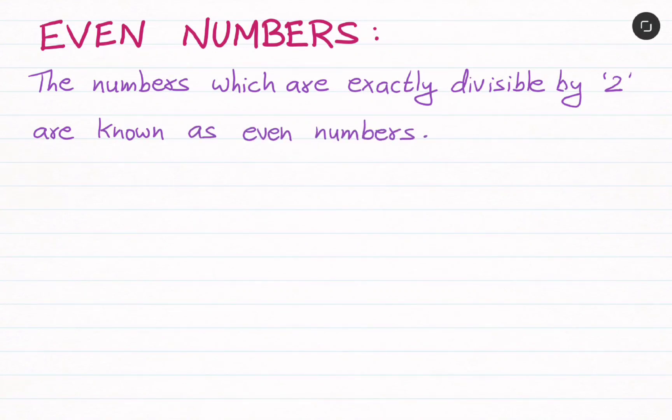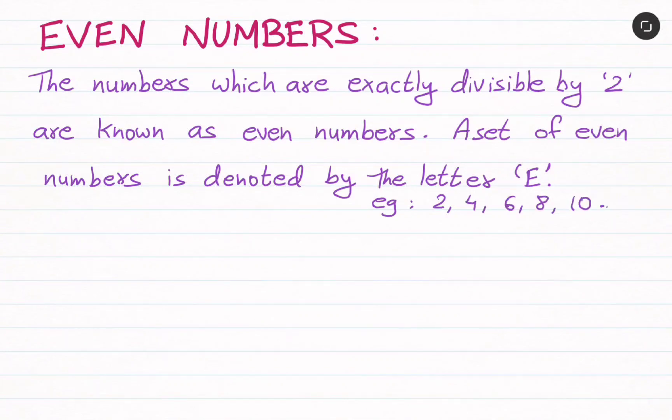The numbers which are exactly divisible by 2 are known as even numbers. A set of even numbers is denoted by the letter E. For example, 2, 4, 6, 8, 10, etc.